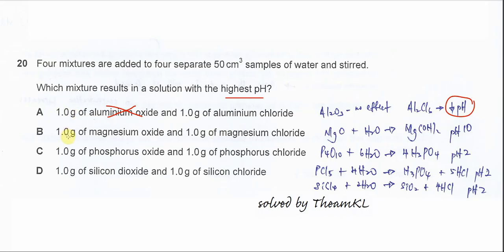For B, 1.0 g of magnesium oxide and 1.0 g of magnesium chloride. We know that magnesium oxide, after it dissolves in water, will form magnesium hydroxide, Mg(OH)₂, and it will be around pH 10. Therefore this one, we just keep in view, might be the answer.